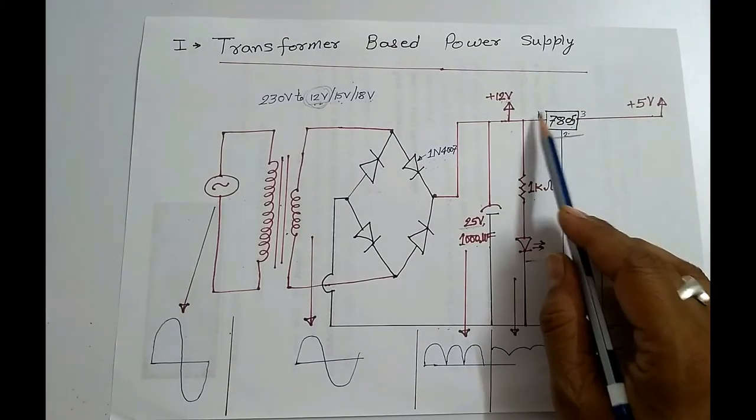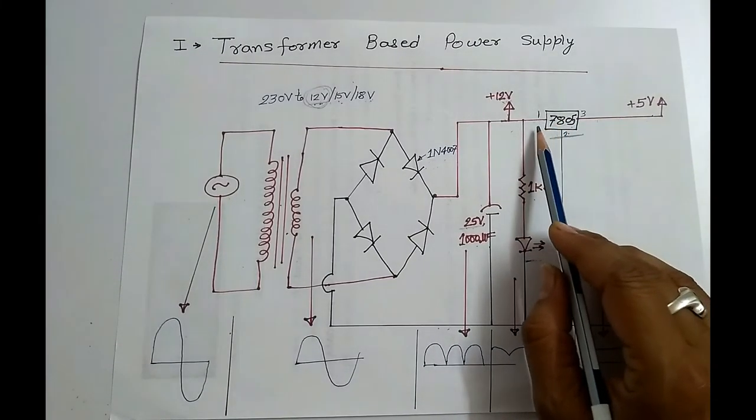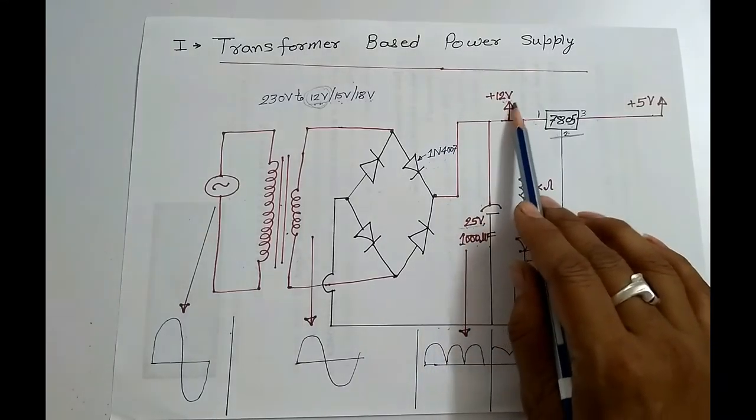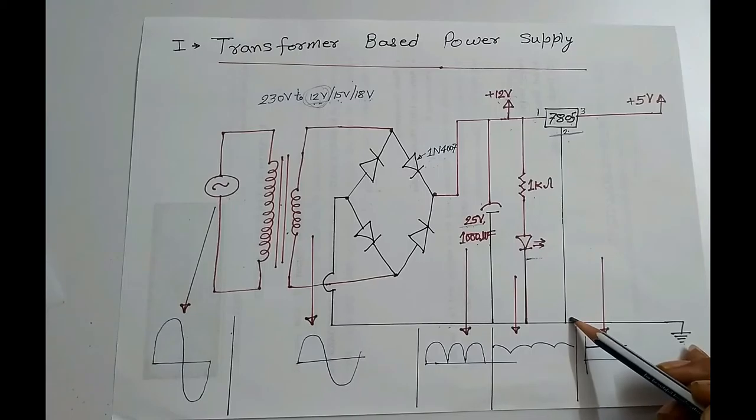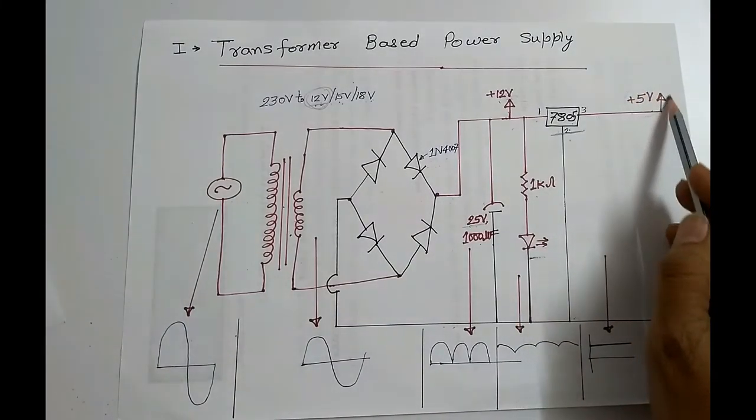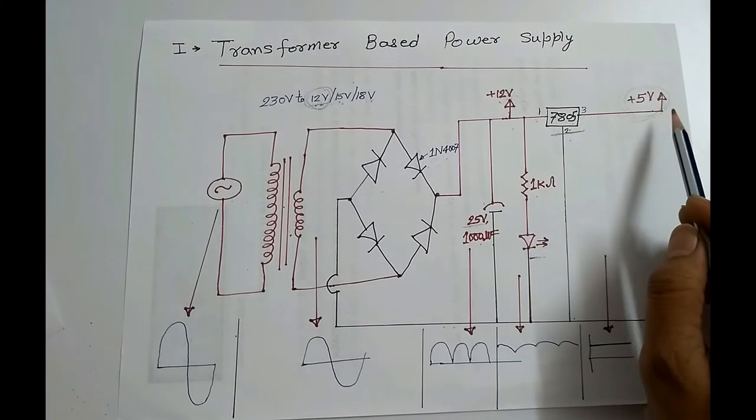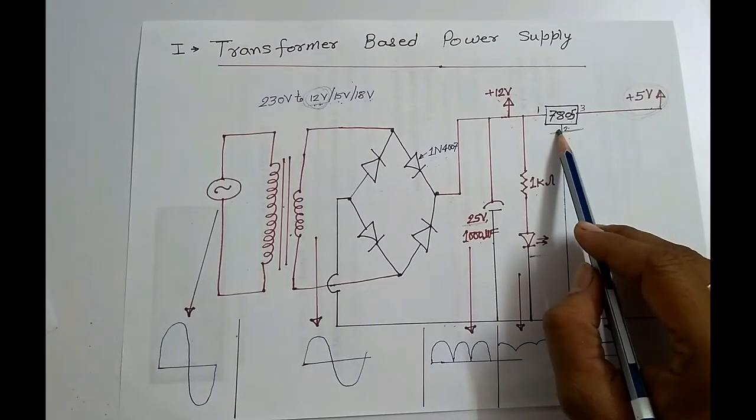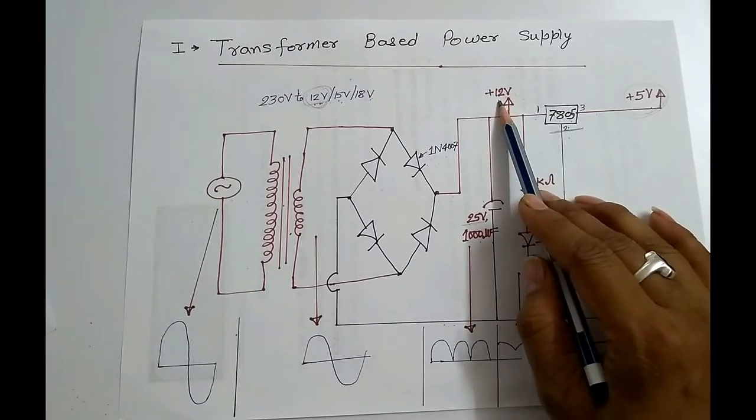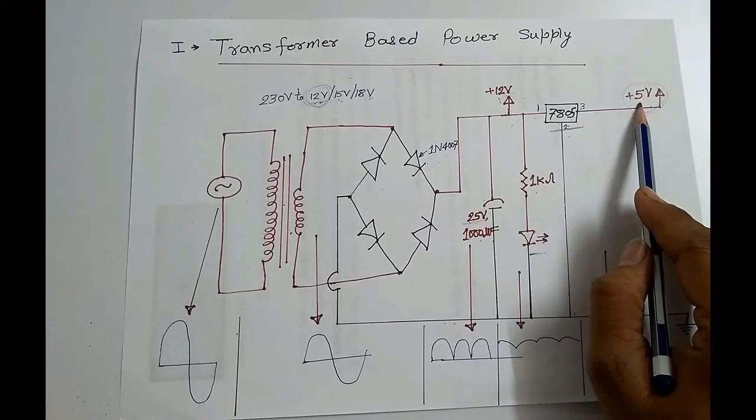So we use one standard voltage regulator IC that is 7805. It's having three terminals. First terminal will connect to 12V supply. Second terminal will go to ground. And from third terminal we get plus 5V DC supply. In short, 7805 IC will convert 12V DC to 5V DC.